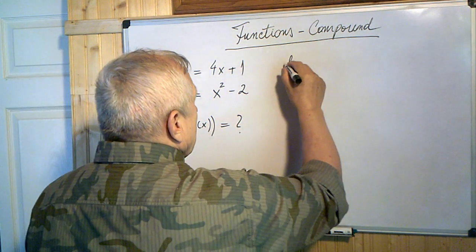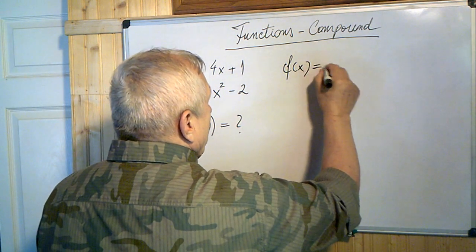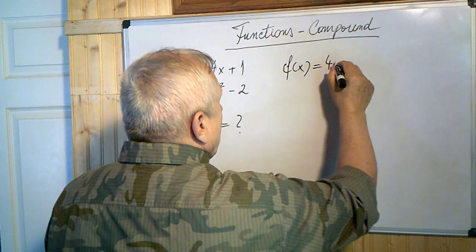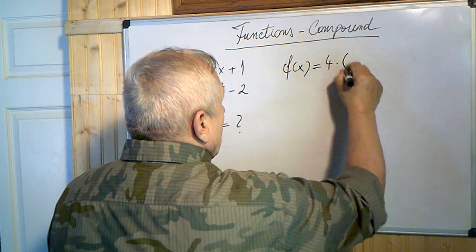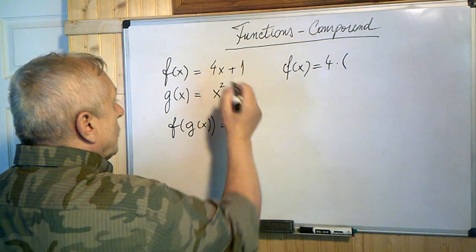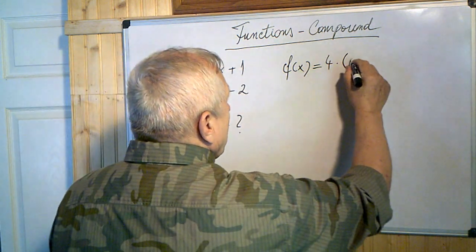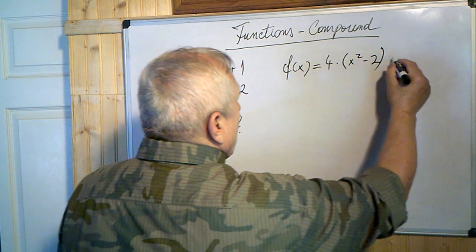Let me write it more clear. So f of x will be 4, instead of x, we'll have g of x, which is x squared minus 2 plus 1.